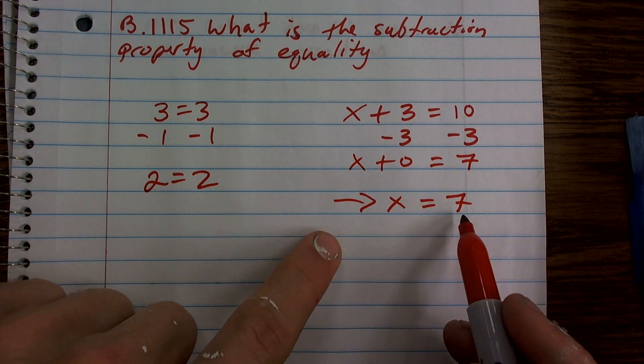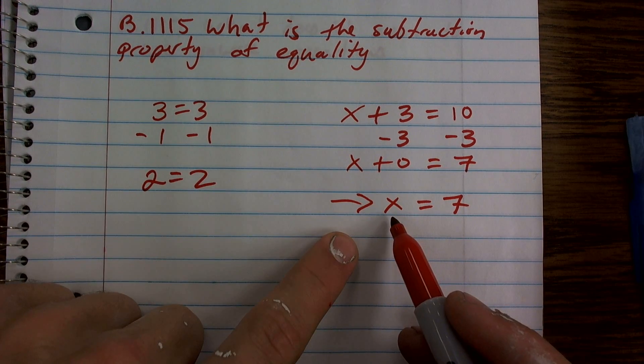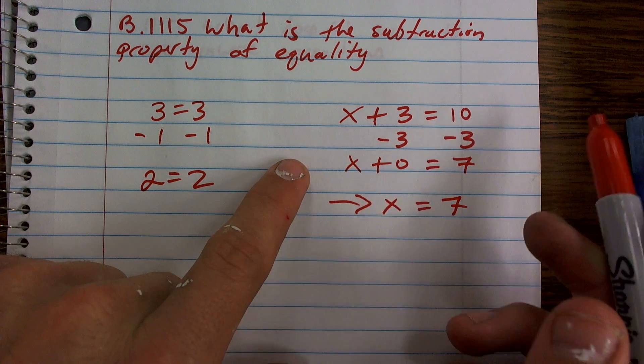Therefore, in this solution, I have what number equals 7? The value of x has to equal 7. What number plus 3 equals 10?